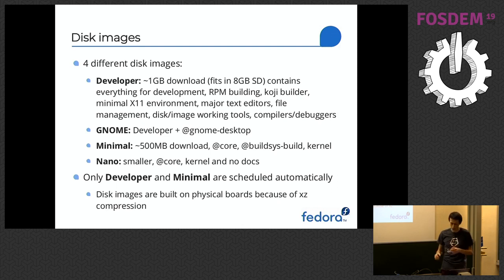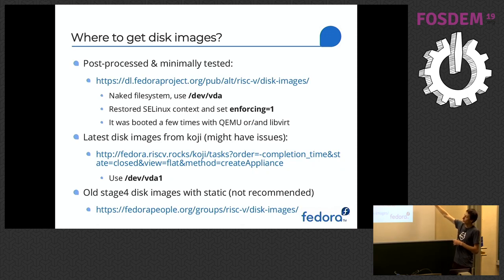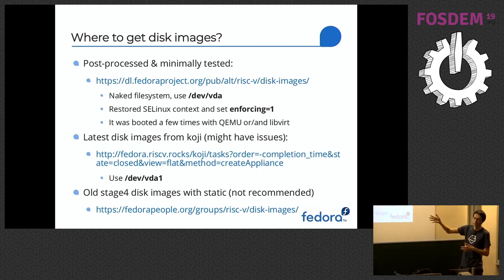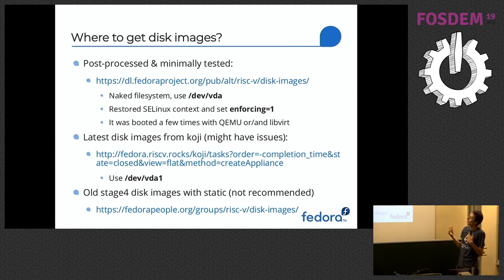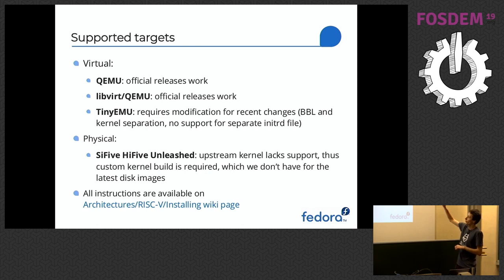Doing images is very costly on IO, so I changed the scheduling. The old Stage 4 images from before Koji are still available and some people still use them. You can directly grab something from Koji — those are untested and might have issues. For the root filesystem you need to use VDA1 since there is one partition. For the newer images, I select and test them — I boot them a few times, enable SELinux, do Koji library testing. The targets we support are QEMU, LibVirt QEMU, and TinyEMU with some modifications, and you can also run on the boards.